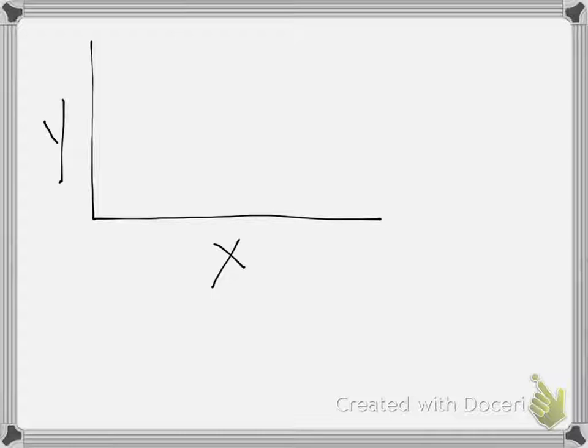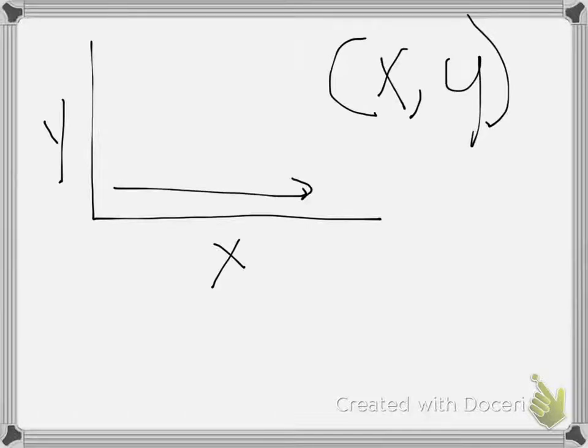We talked about points on the coordinate grid. Ordered pairs. Your ordered pair is always X, then Y, which means you go over, then up. First you go over, then you go up.